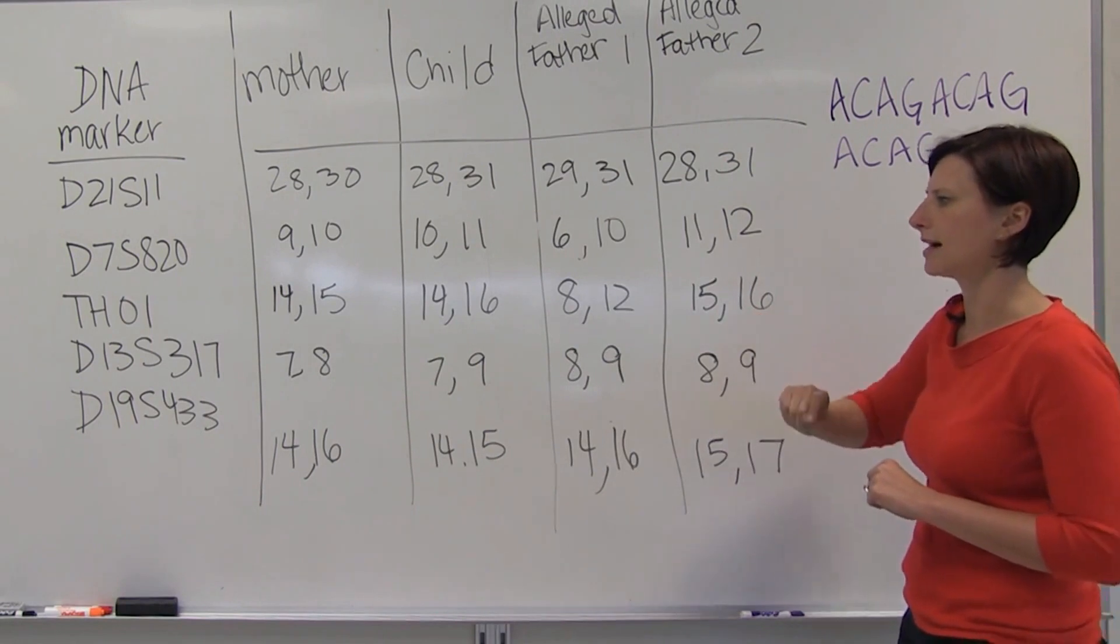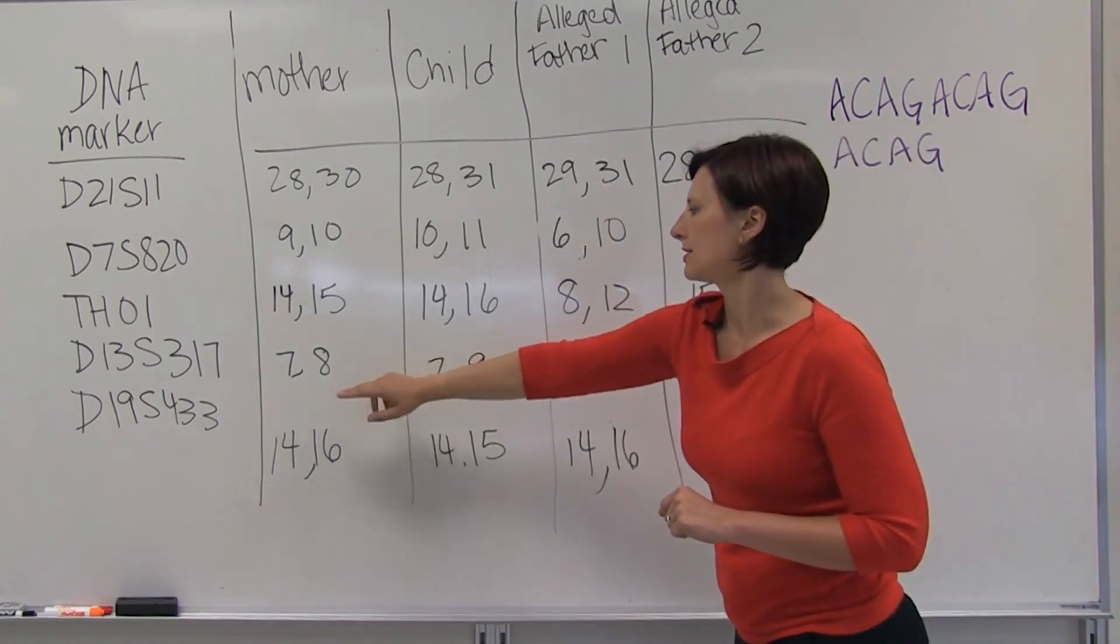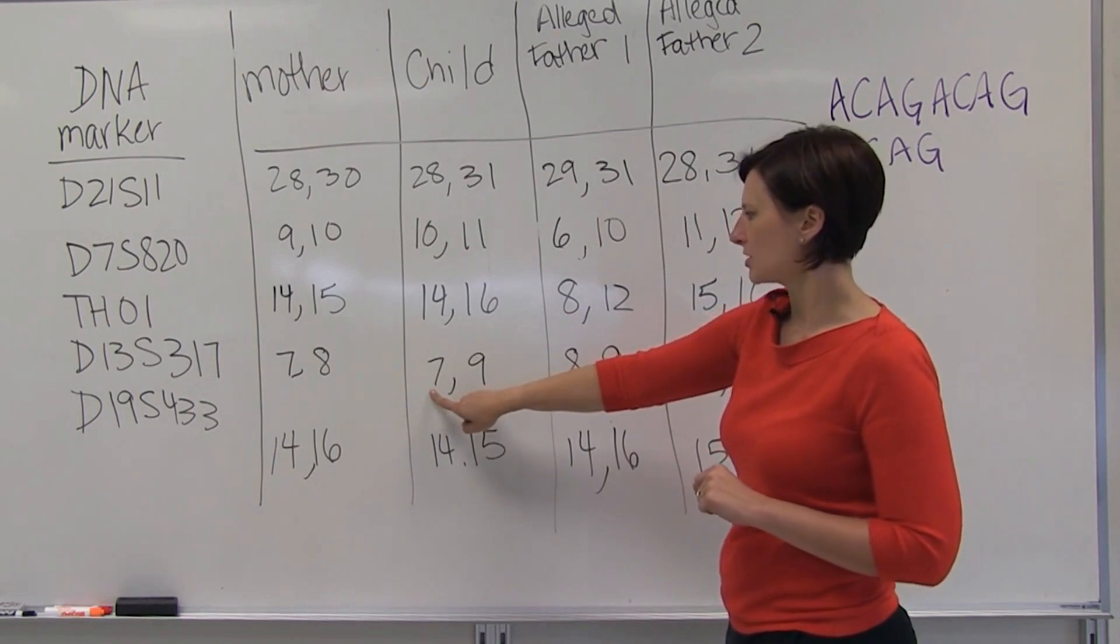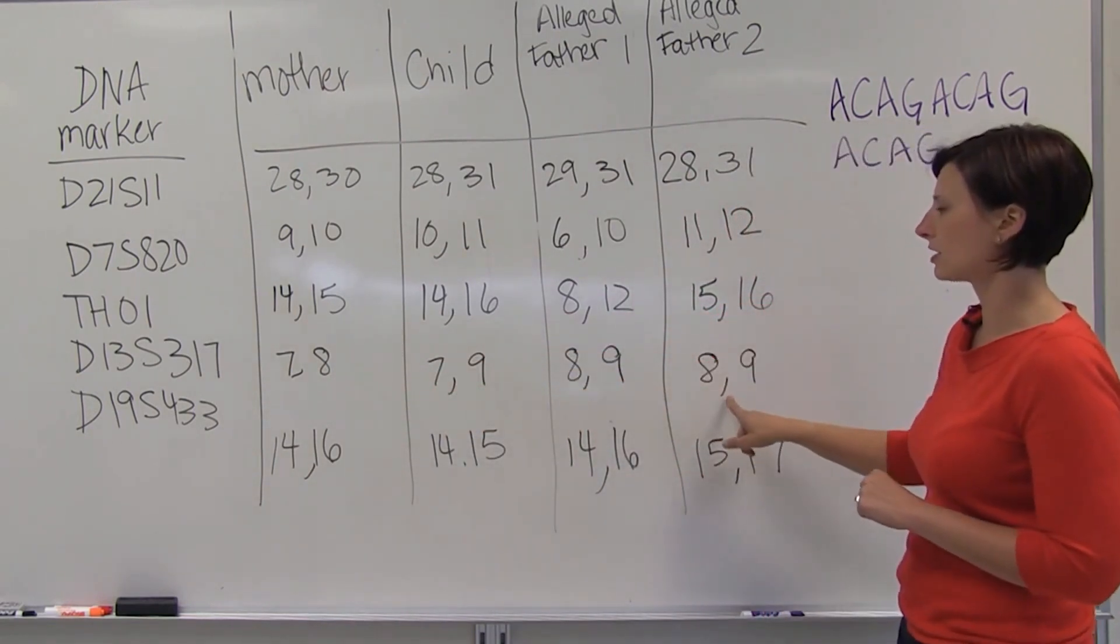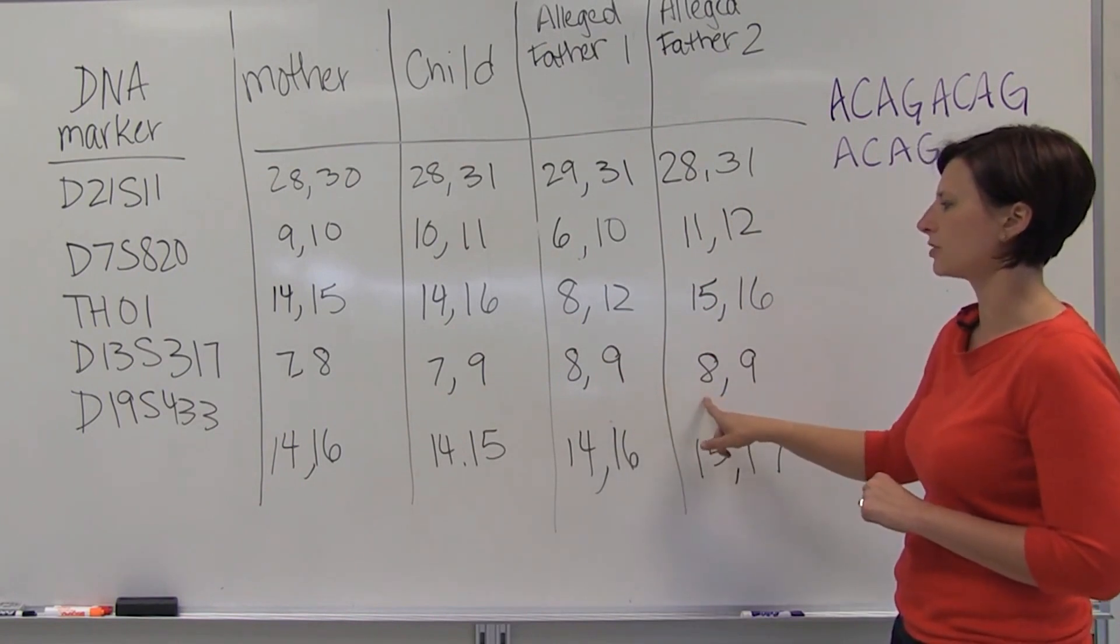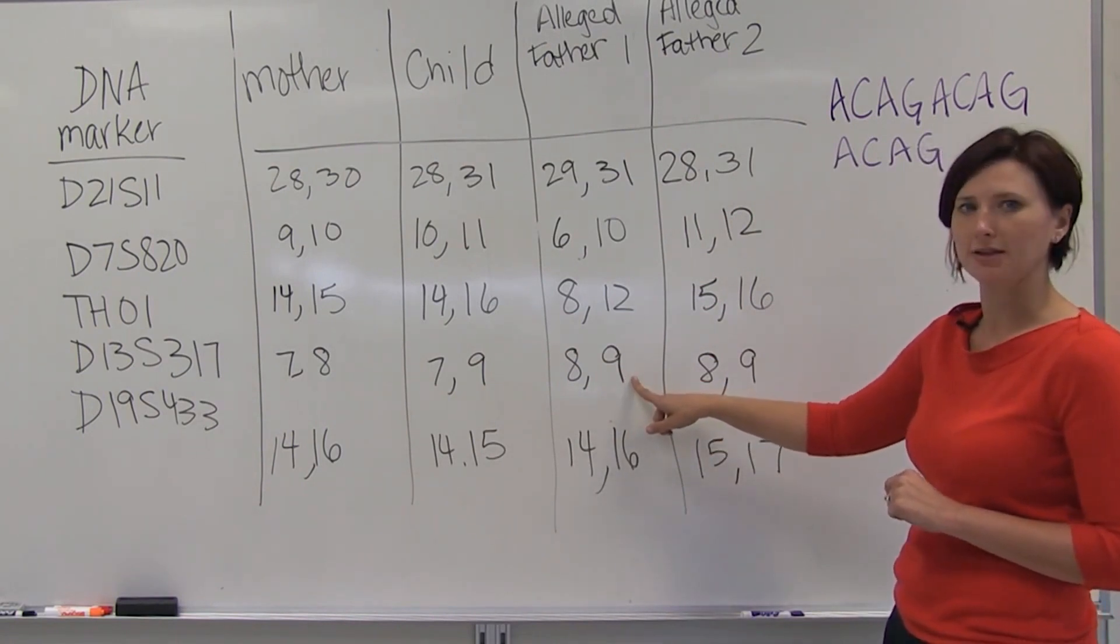In the fourth locus, we see the 7 coming from the child's mother and the 9 could have come from either of these two alleged fathers, but since we've already ruled out alleged father 1, we know now that we're just still in the running with alleged father 2.